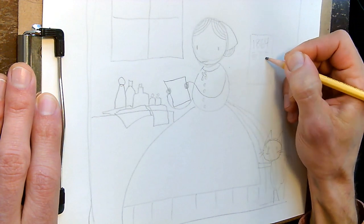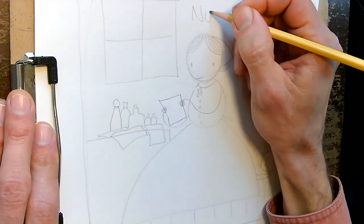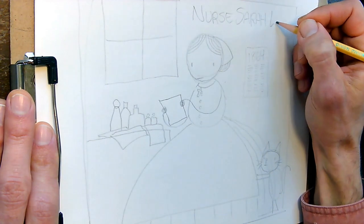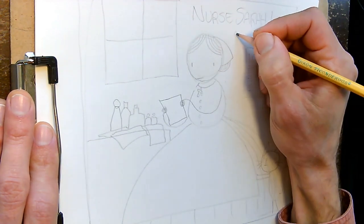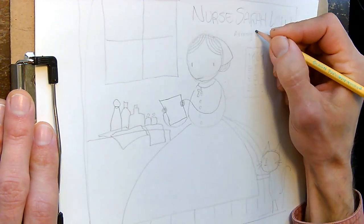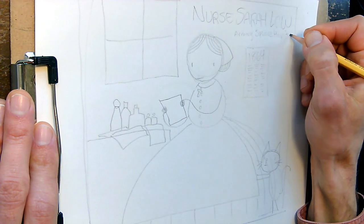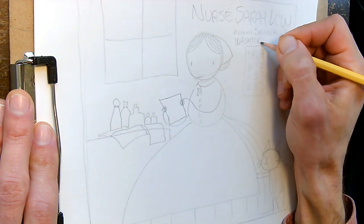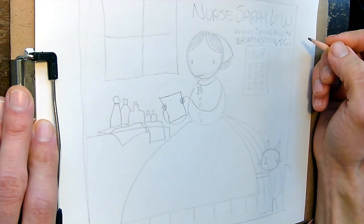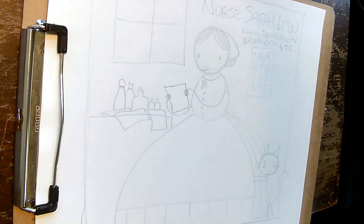I'll put the year on there and that reminds me we can put sort of a title up here: Nurse Sarah Lowe, Armory Square Hospital, Washington DC, and right below that is the calendar so you know the time and place of this picture too.